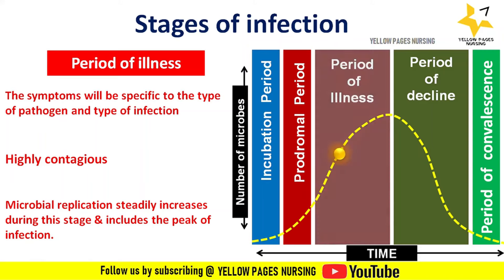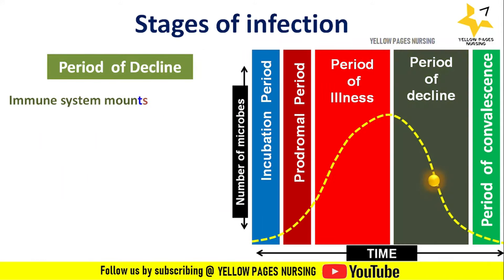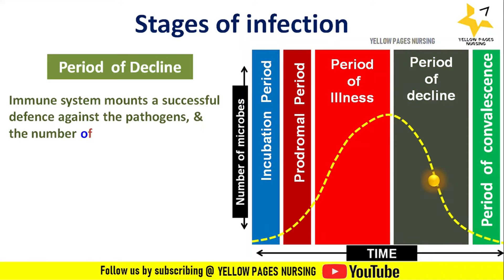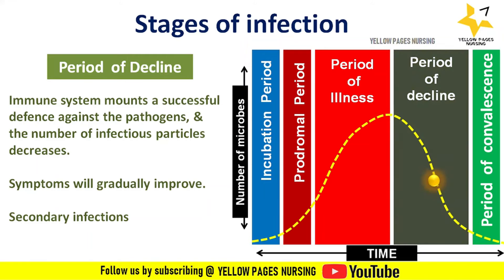Next comes the period of decline. During the decline stage, the immune system mounts a successful defense against the pathogens and the number of infectious particles decreases. Symptoms will gradually improve in this stage. However, a person can develop secondary infections during this stage if the primary infection has weakened their immune system.